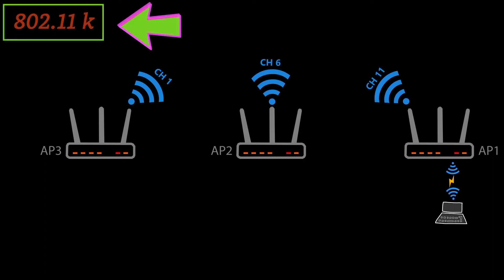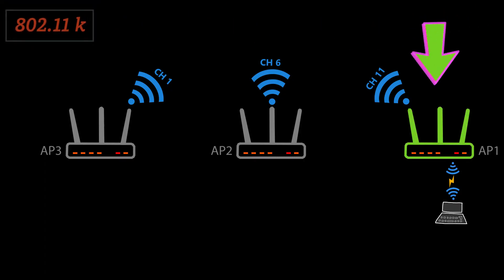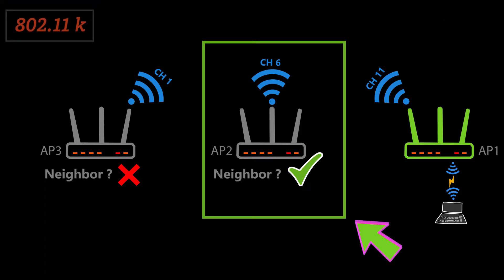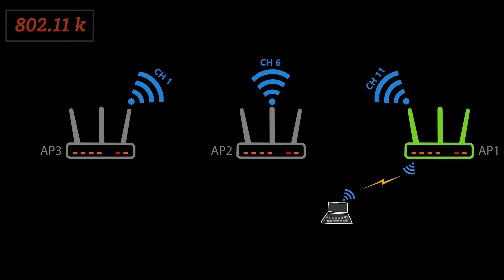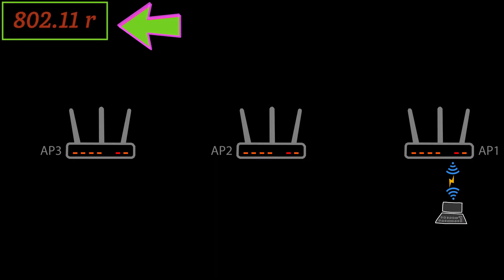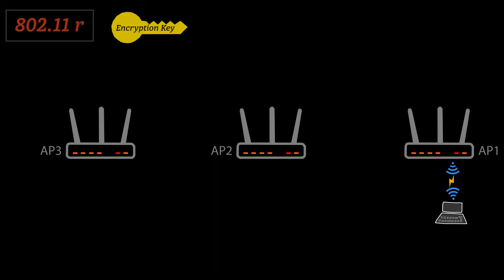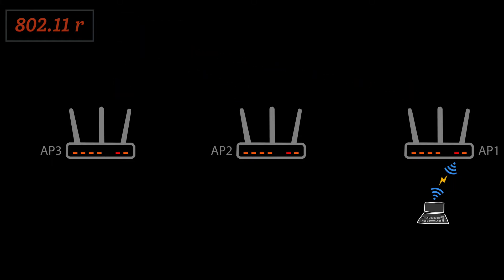For example, one standard has the access point provide information about neighboring access points and their channels, sending this to the connected client, which can help it determine faster which AP it should connect to next. Another standard allows the encryption keys used for security and authentication to be stored on all access points within the network, which should reduce the latency and time required for the client to be authenticated every time it roams to a new access point.